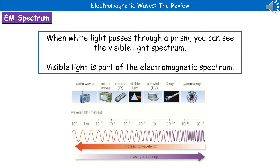For your exam, you need to know the names of all the different parts of the electromagnetic spectrum, and you need to know them in order. You also need to know which end has the highest wavelength and the highest frequency. So make sure you know the sequence: radio, micro, infrared, visible, ultraviolet, x-rays, and gamma rays. Remember that radio waves have the longest wavelength and the lowest frequency, or that gamma rays have the shortest wavelength and the highest frequency.